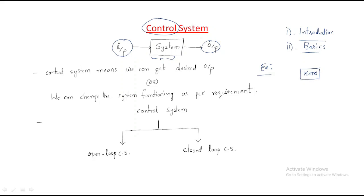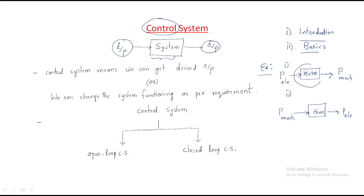A motor takes some input — that is electrical power — and generates the output, which is mechanical power. A generator does the same thing in reverse: it takes mechanical power as input and gives electrical power as output. Both are systems with different applications.